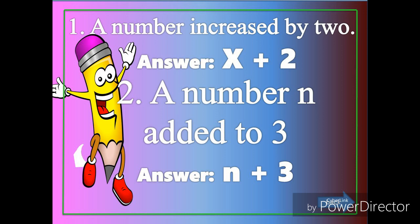Let's have example number two: a number n added to 3. If we're going to translate, a number n is n. And then we're going to use the plus sign because of the word added to. Then we have 3. So we have n plus 3.